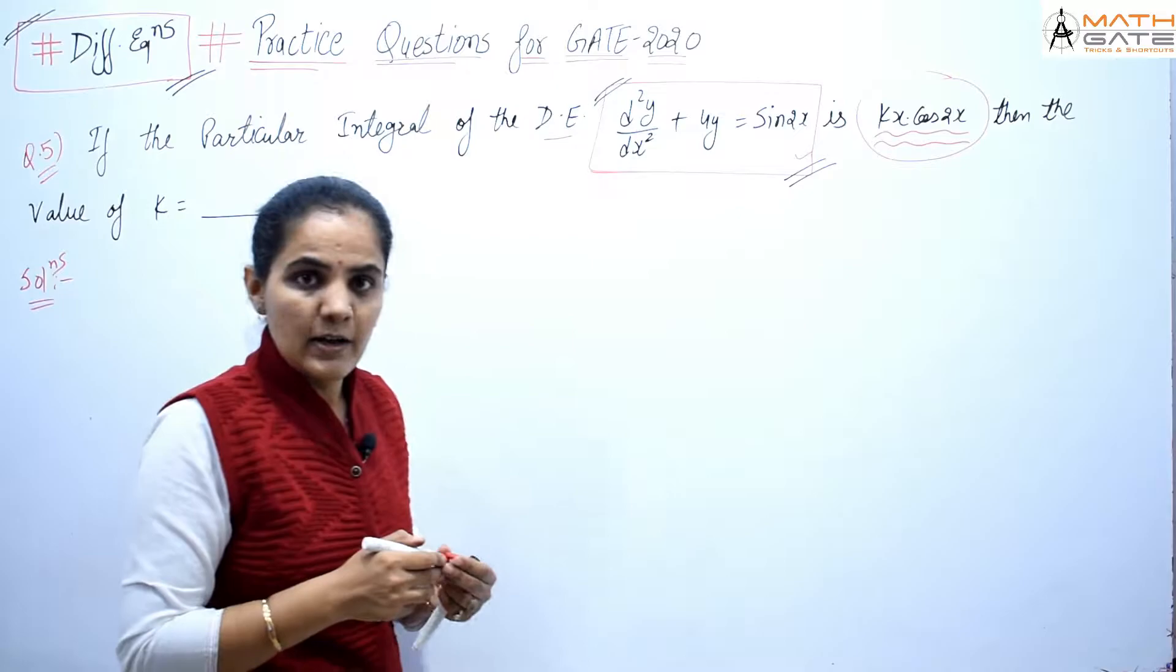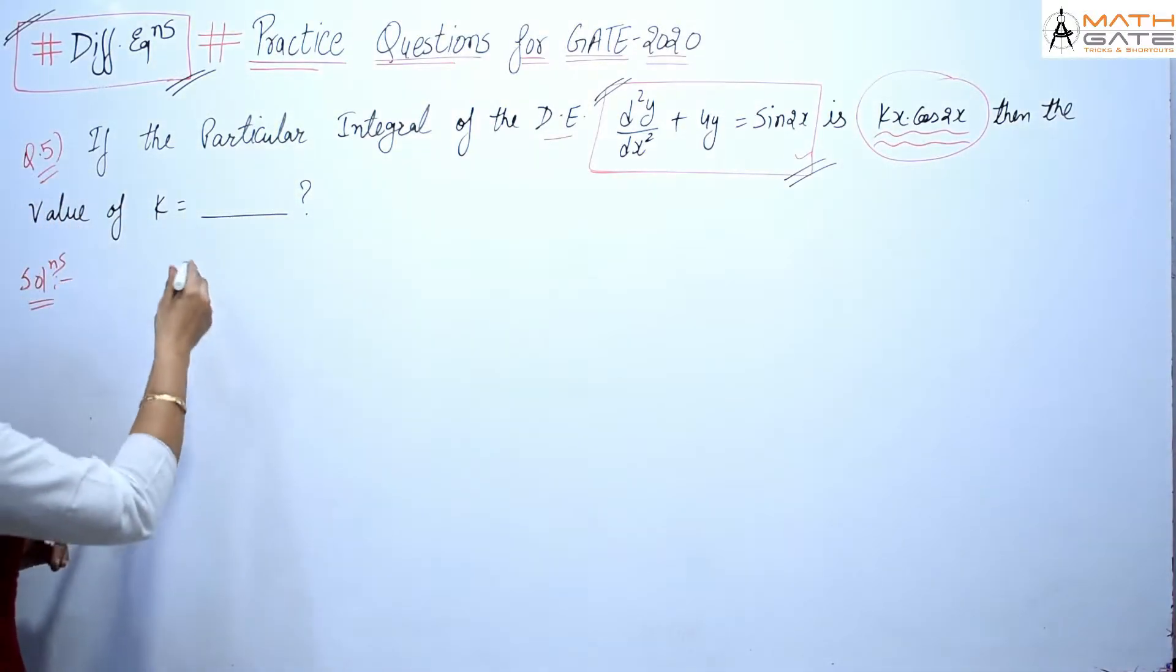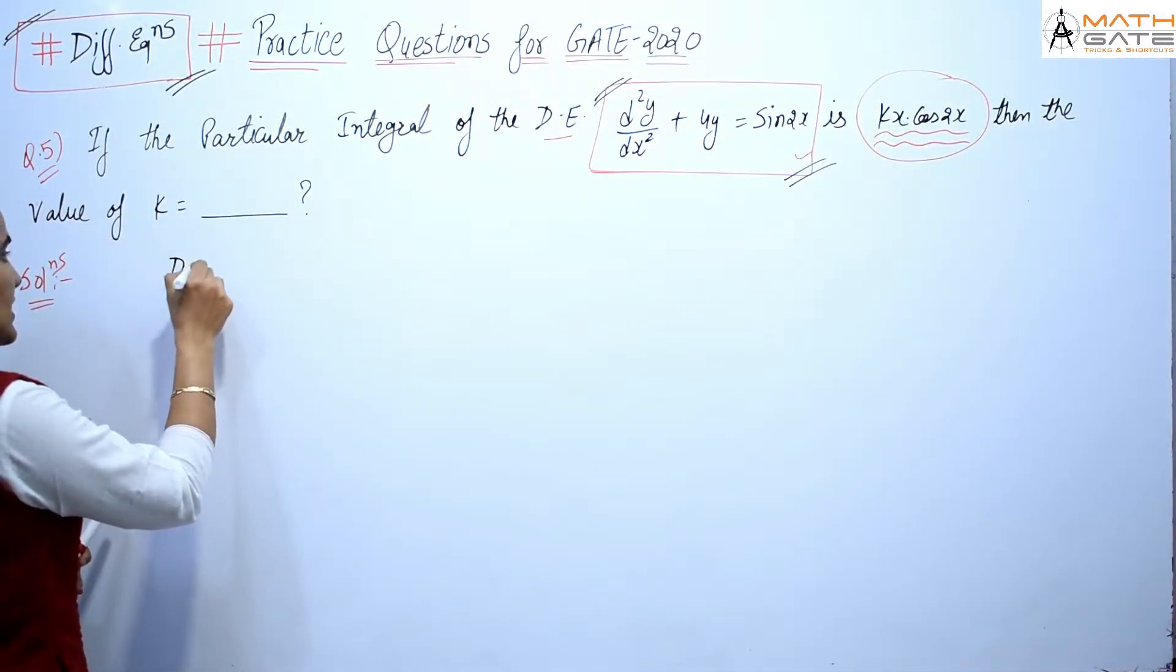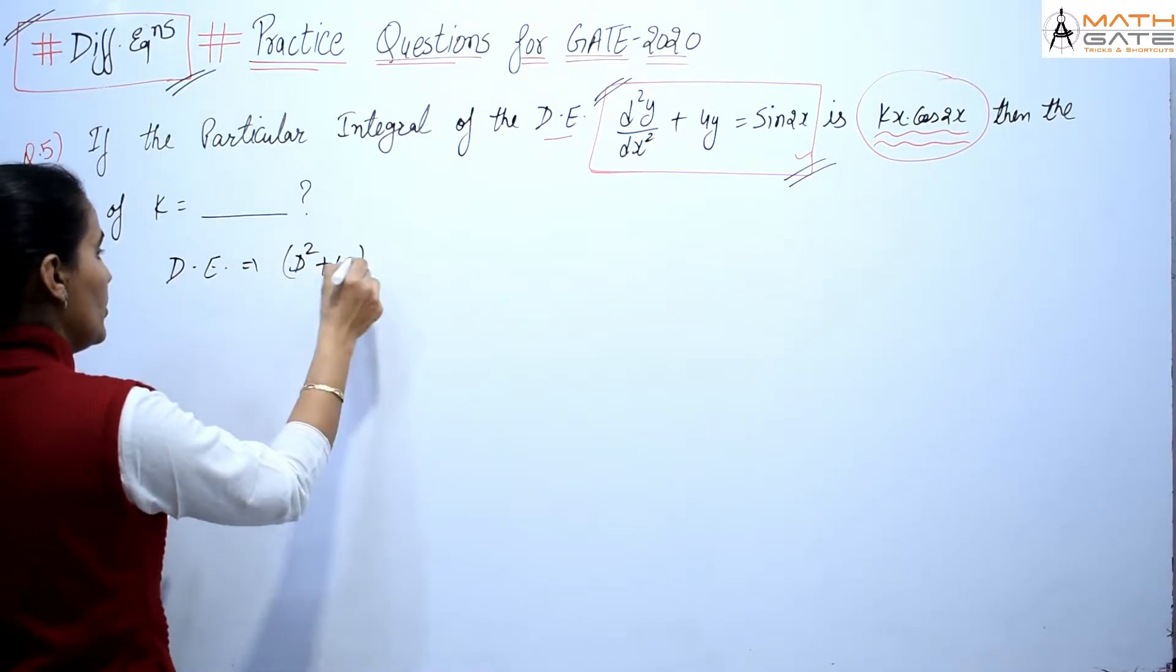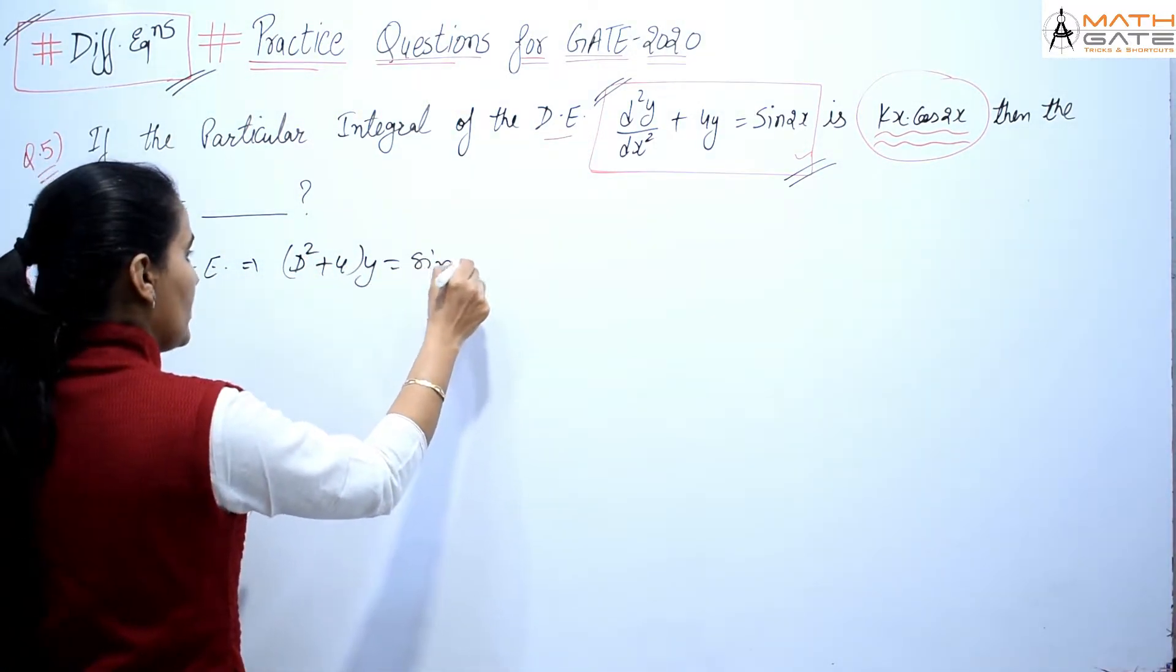Okay, so let's start. Let's talk first of this differential equation. We can write the differential equation as (D² + 4)y = sin(2x).